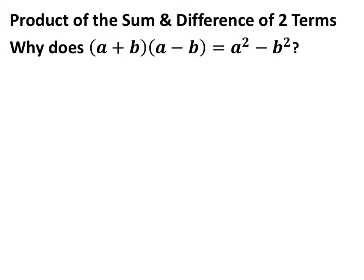Hey you guys, this is Mr. Sal. We're looking at the product of the sum and difference of two terms. That is, why does the quantity a plus b times the quantity a minus b equal a squared minus b squared? So if you can FOIL on this problem, you can solve it pretty easily and find the purpose of why these two equal this one right here.